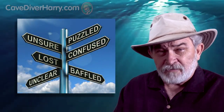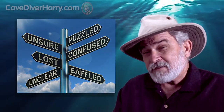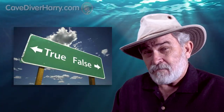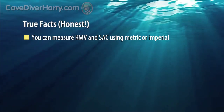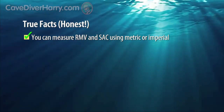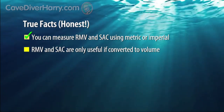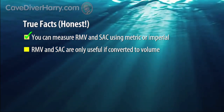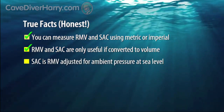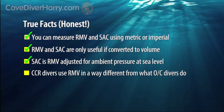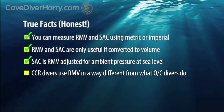If you didn't already have a good understanding of RMV and SAC rate at the beginning of this video, you should have a better understanding now. Let's recap by busting some of the myths we identified at the beginning. You can measure both RMV and SAC using either metric or imperial values — the choice is entirely up to you. Although you initially use either bars or PSI when measuring RMV, the results are only useful if you convert them from pressure to volume. SAC rate is nothing more than RMV adjusted for ambient pressure at sea level. CCR divers use RMV too, but in a way that is very different from what open circuit divers do.